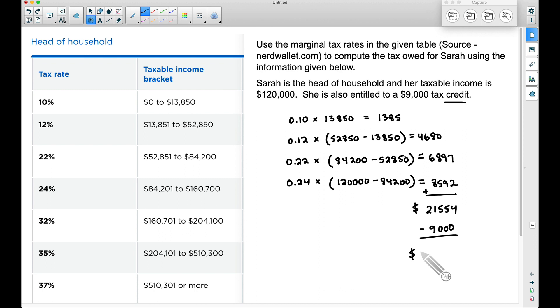This final answer here, with this tax credit subtracted off, the amount of taxes that Sarah will owe is $12,554. Now when you're doing these types of problems, if you don't have a tax credit given in that problem, we don't subtract anything off and we would simply be done right there. In other situations, you may see an exemption or deduction. Those are applied before you find the taxable income.